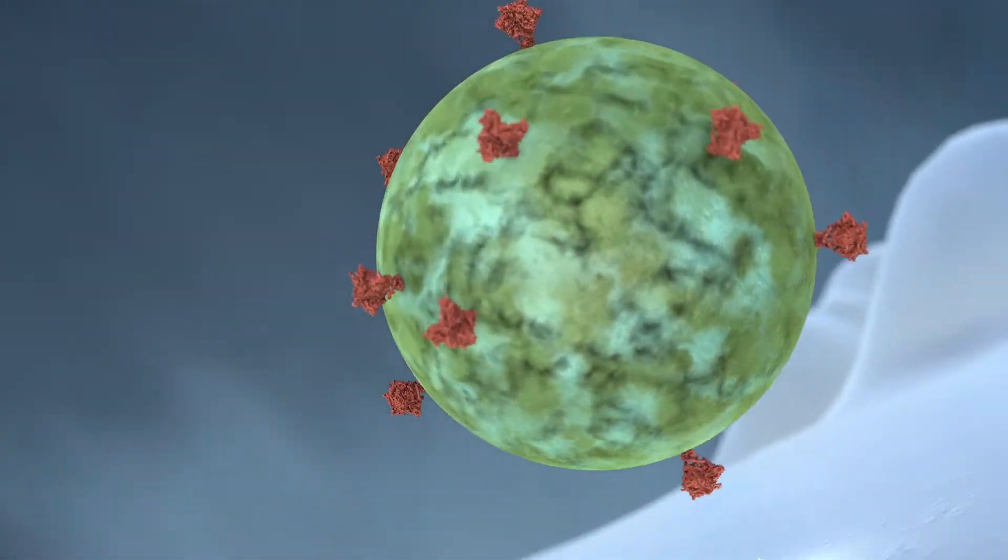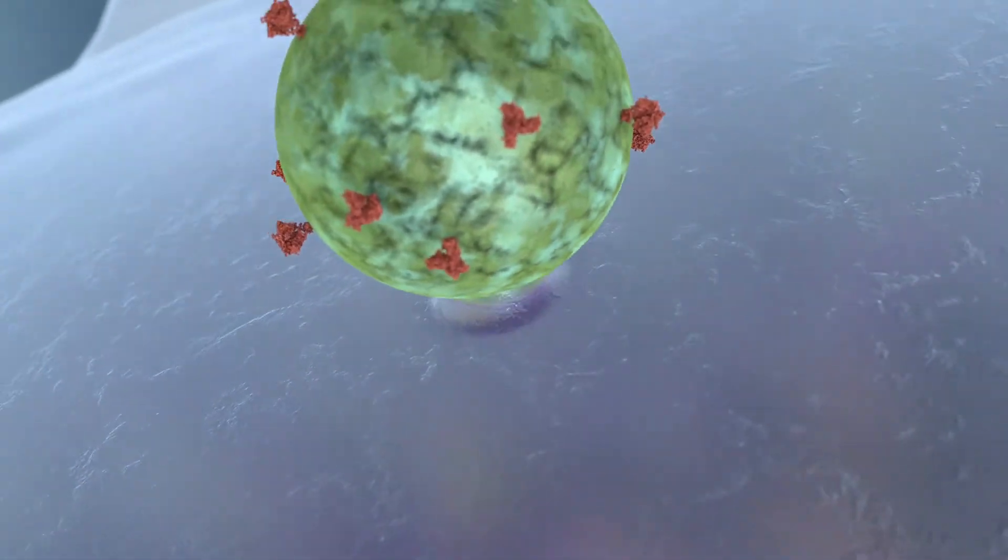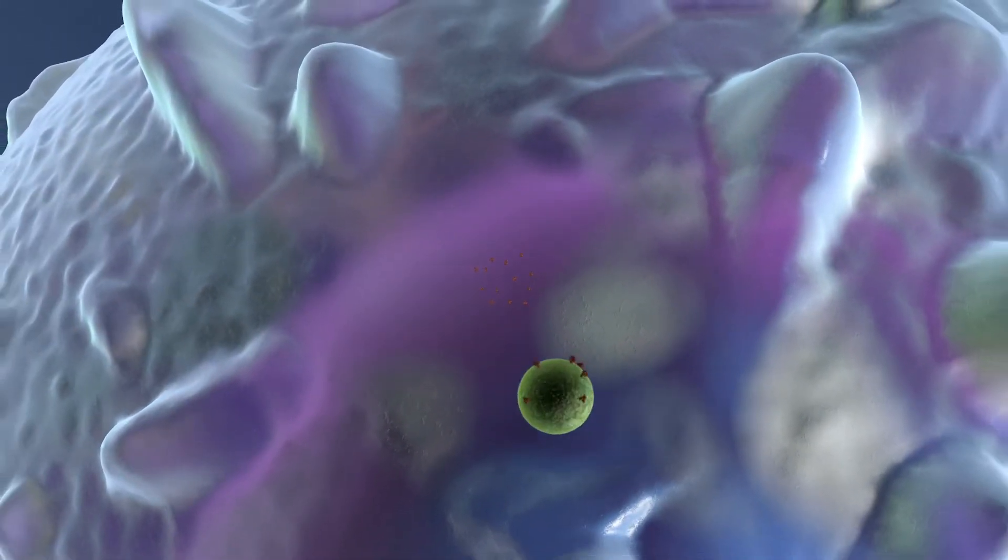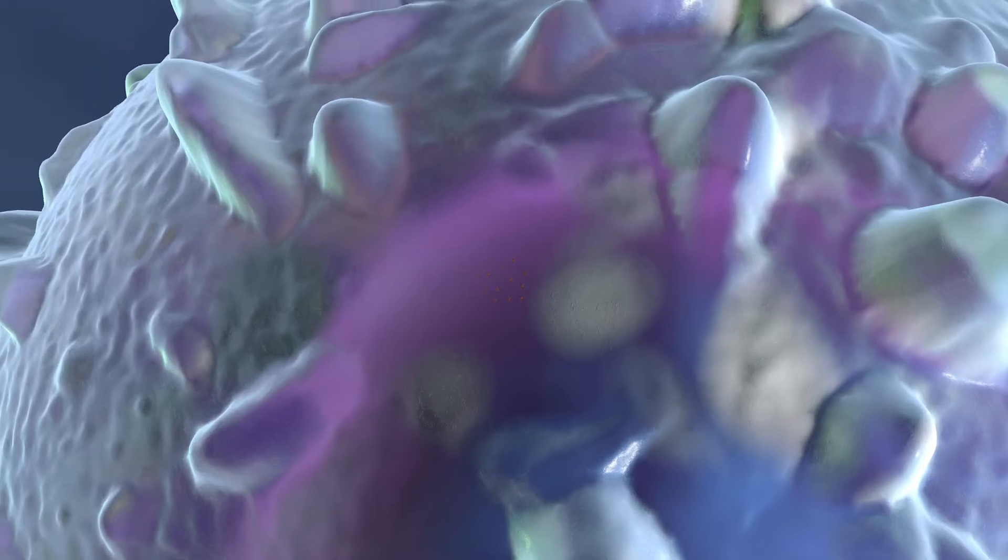HIV also inserts itself into the genetic material of the host, allowing it to hide from the immune system. This, along with the virus's rapid mutation rate, enables HIV to infect more of the body's cells, leading to sickness and progression of the disease.